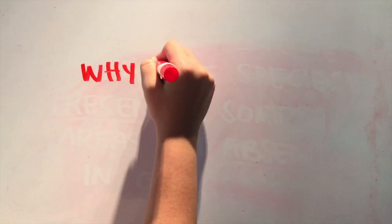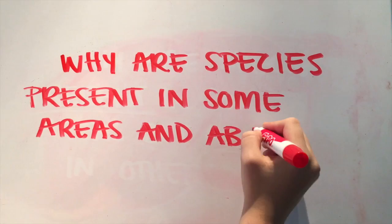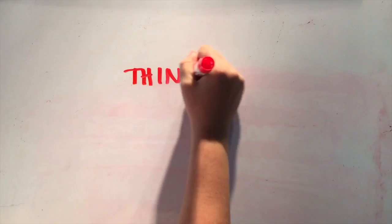This concept is what answers the question of why are species present in some areas and absent in others, a question biogeographers have spent a lot of time researching. Evolution is all about a species' development throughout the generations in favor of their survival. This includes their ability to compete and reproduce.